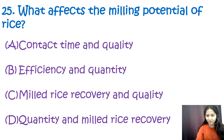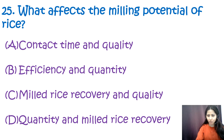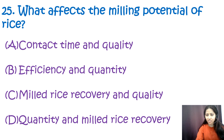Question 25: What affects the milling potential of rice? Options are contact time and quality, efficiency and quantity, milled rice recovery and quality, and milled rice recovery. Please comment the correct option in the comment box below.